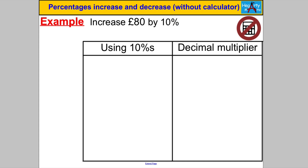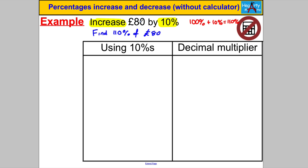We are asked to increase £80 by 10%. It's really important to read the question — it's not saying find 10% of £80, it's saying increase £80 by 10%. If you originally had £80, that is 100%. If you increase by 10%, you're adding an extra 10%, leaving yourself with 110% at the end. So I translate this to: find 110% of £80.